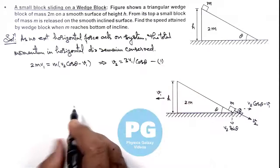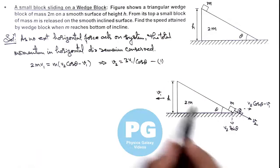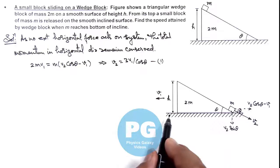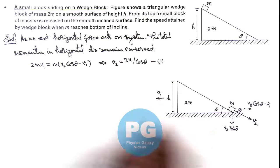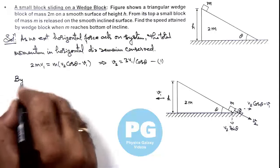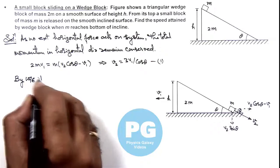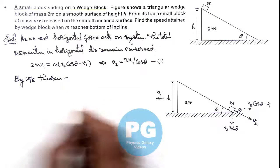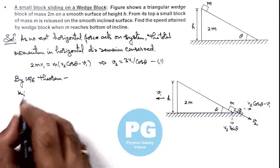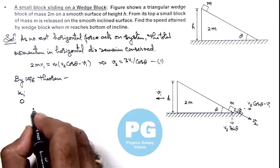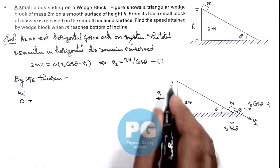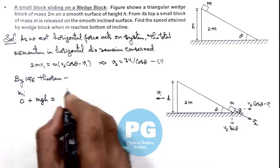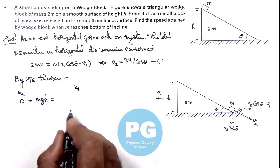And as no friction is present anywhere, so we can say whichever kinetic energy is gained by the system is due to work done by gravity. So we can write by work energy theorem, initial kinetic energy of system was zero plus the work done by gravity on this block is mgh, is equal to the final kinetic energy gained by the system.